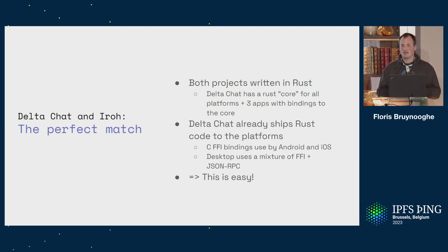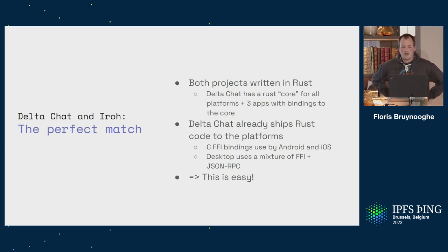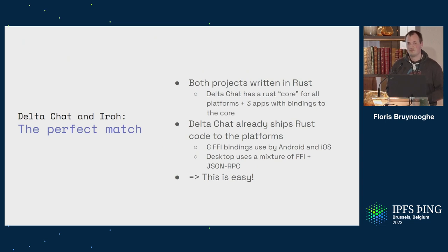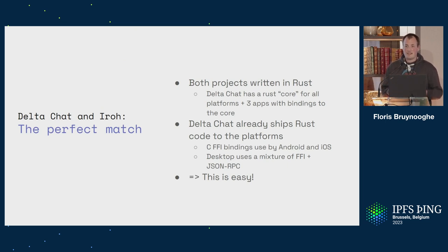They already have bindings for that — Java and iOS using C FFI, and the desktop has a mixture of that plus JSON RPC now. And importantly, Delta Chat has already figured out how to ship this code to all their platforms. They support phones that are terribly old — Android 4 still. They've already figured out the toolchain and compiling, so all the hard work should hopefully already have happened.